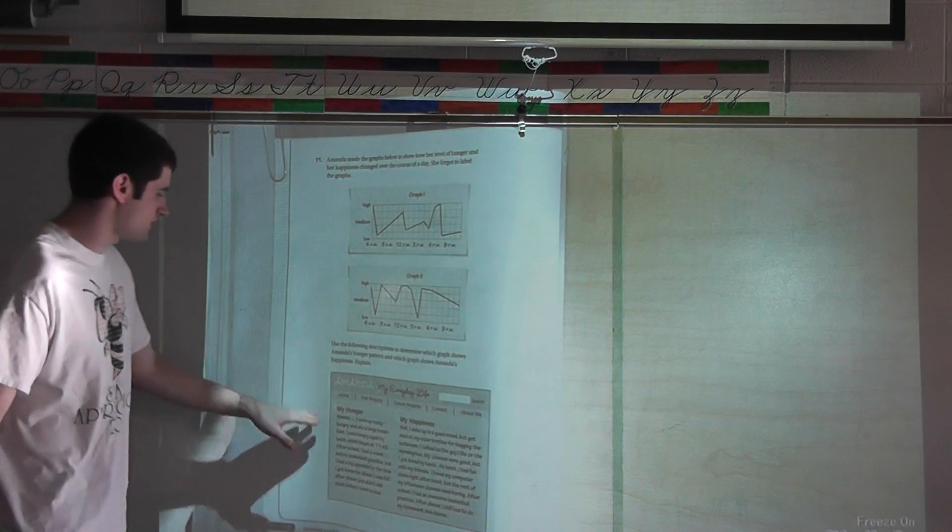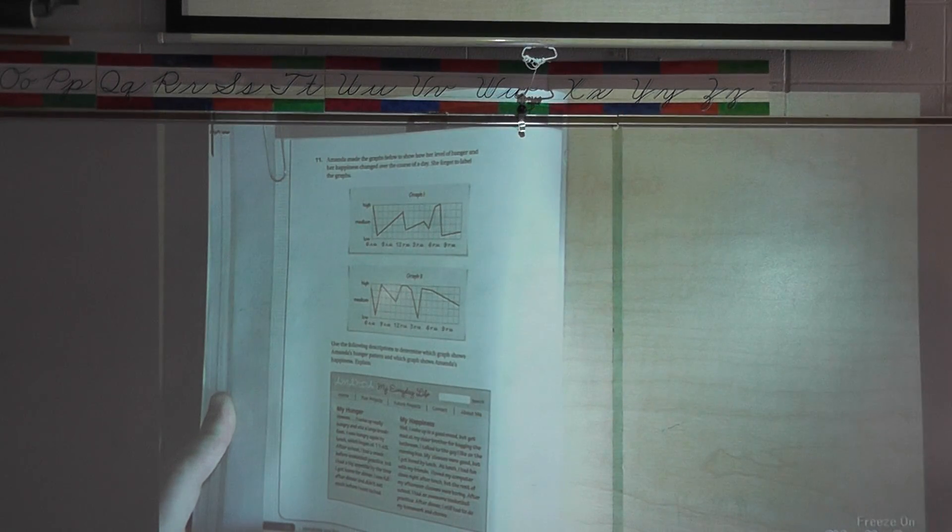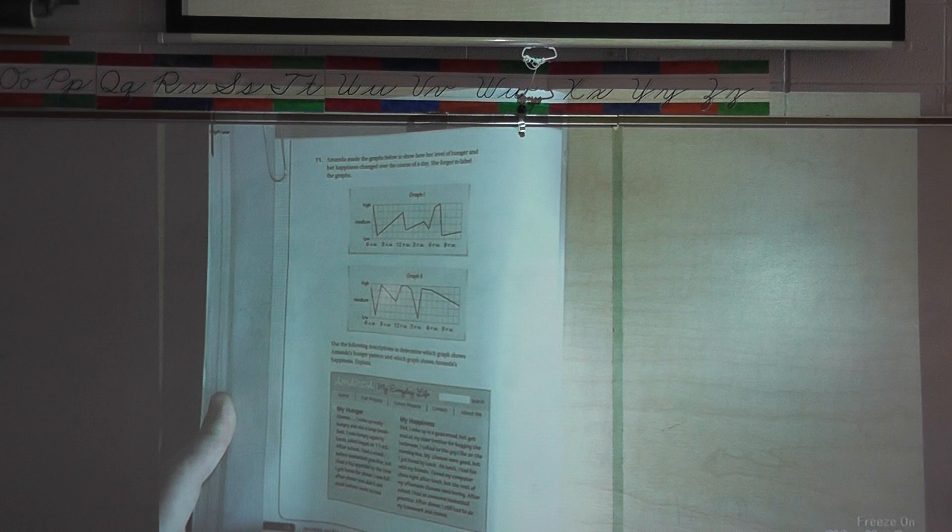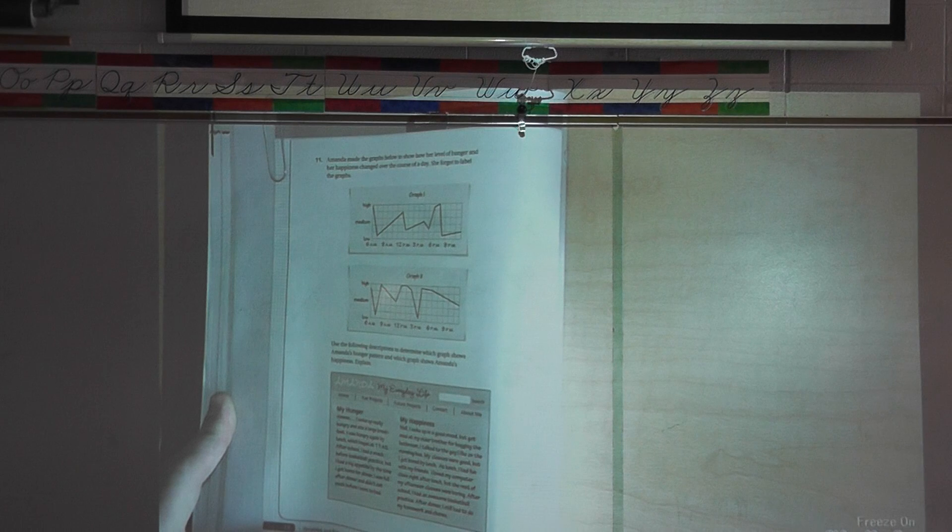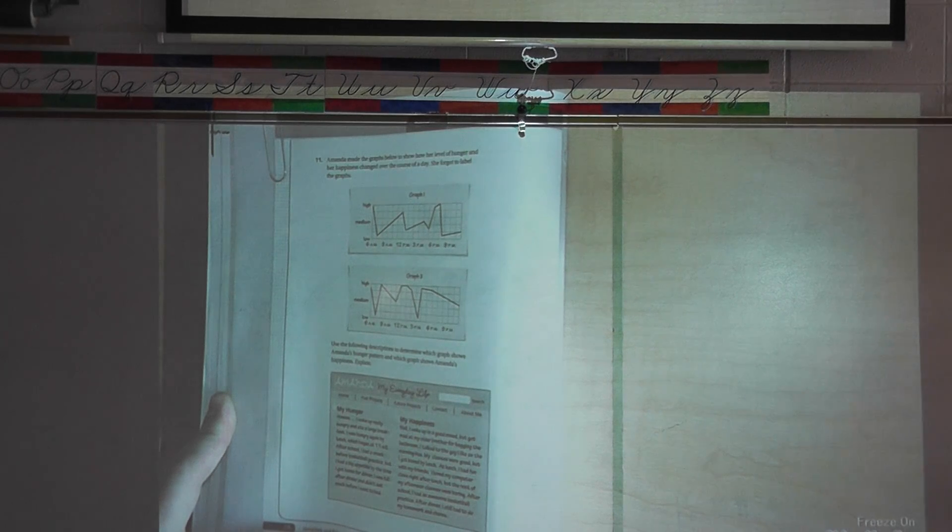Amanda made the graphs below to show how her level of hunger and her happiness changed over the course of the day. She forgot to label the graphs. You're going to use this information down here about her happiness and her hunger to figure out which graph is for happiness and which graph is for hunger. Go ahead and pause that video and we'll see what you come up with. A lot of information in this one.